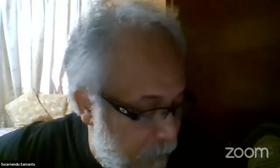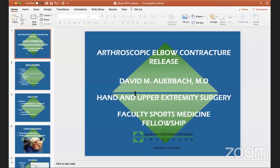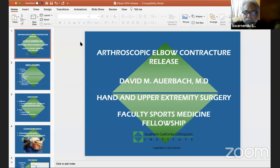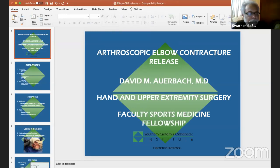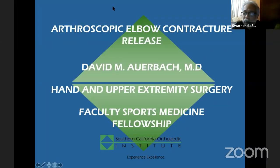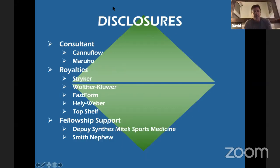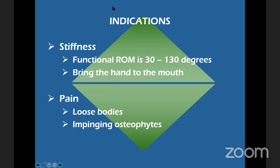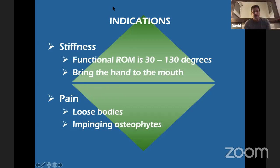Now David from California is going to talk on arthroscopic stiff elbow release. The indications for a contracted elbow: the functional range of motion is roughly 30 to 130 degrees, but most importantly the elbow brings the hand to the mouth — that is the most important goal and the most common complaint with elbow stiffness. Pain could be due to loose bodies or impinging osteophytes.